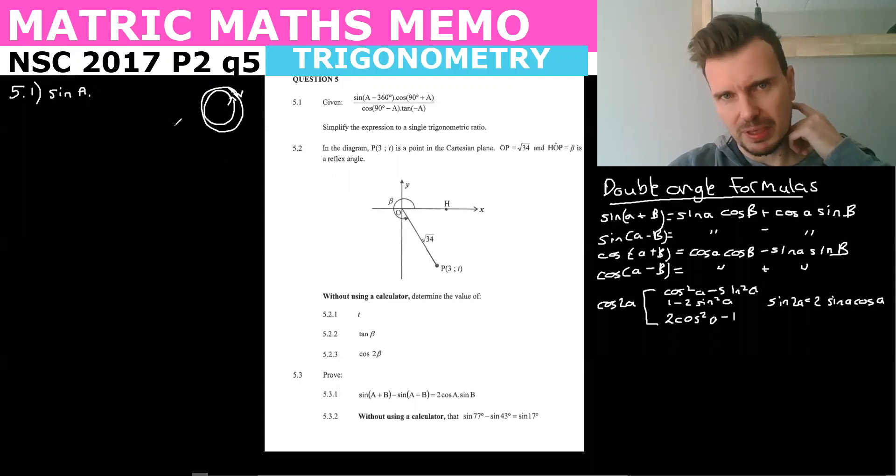Now cos 90 plus A, easiest way to do it is just to imagine that A was an angle. So say cos, you give A a value of 30, that's what I do. So then you say, well, cos 120 would be what it would be, and you get negative a half.